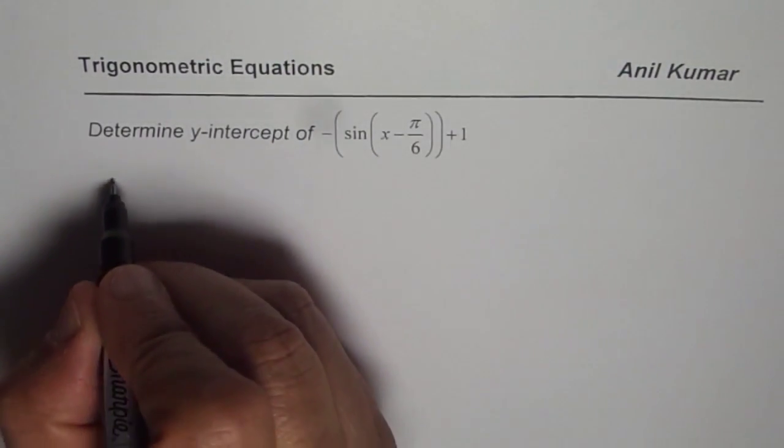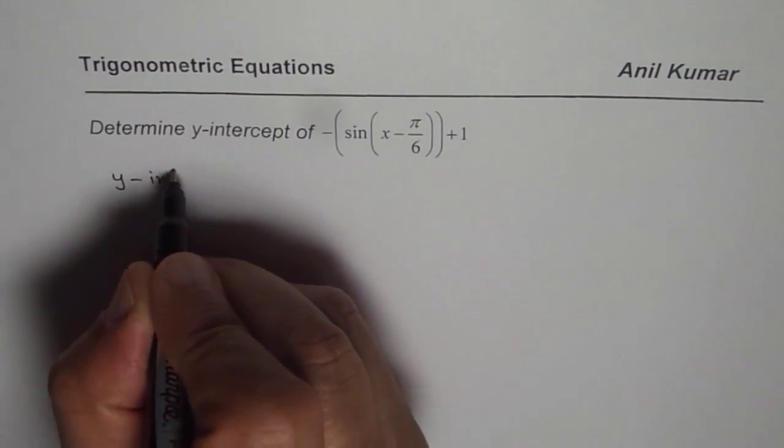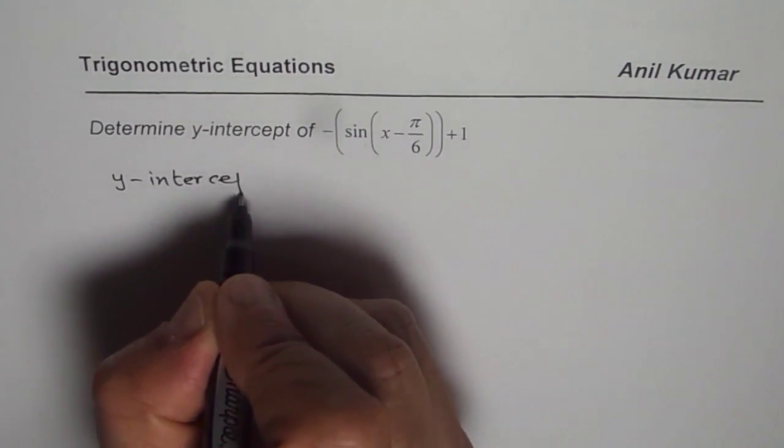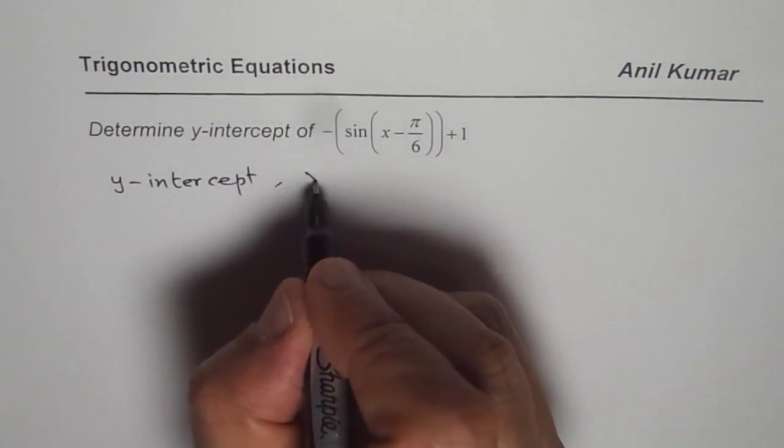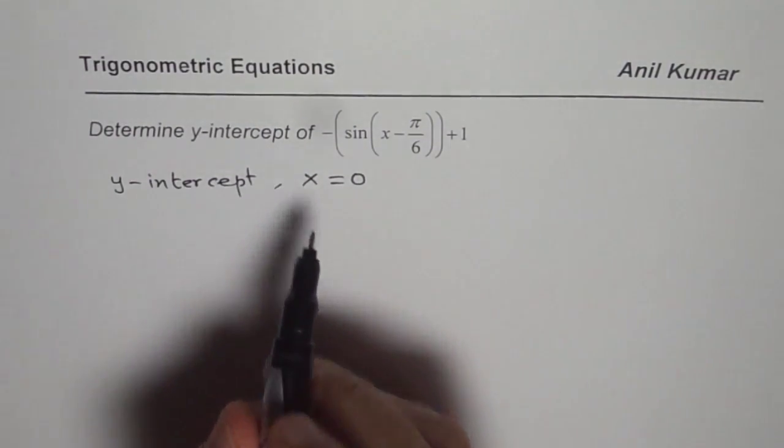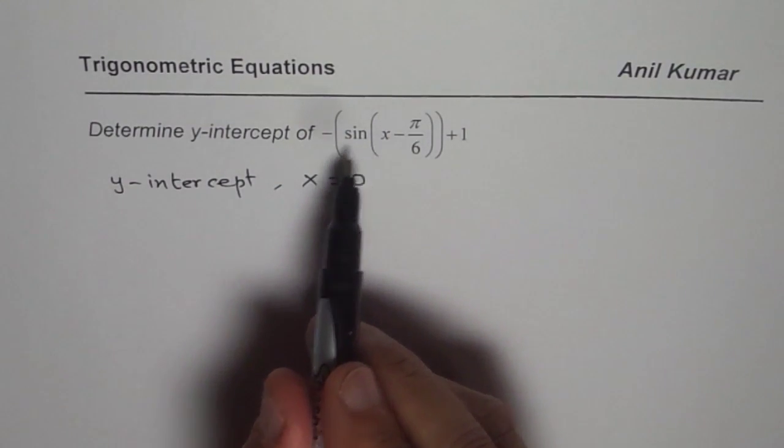So what is y-intercept? When I say y-intercept, it means where the graph crosses the y-axis, where x is equal to 0. So basically, if I substitute x equals to 0, I get the y-intercept.